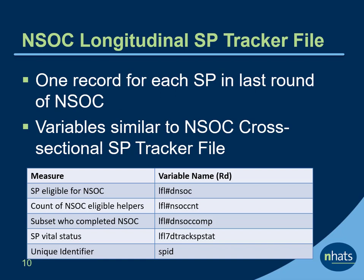The longitudinal NSOC SP tracker file includes all persons with a sample person interview in the last year of NSOC. The file is similar to the NSOC cross-sectional SP tracker file in that it identifies each NHATS SP who had a caregiver eligible for the longitudinal component of NSOC, and provides a count of eligible helpers, the subset who completed the longitudinal component of NSOC, and the SP ID identifier.